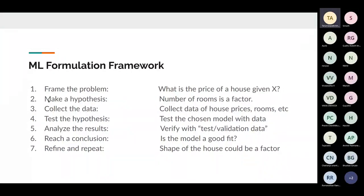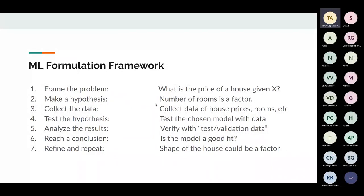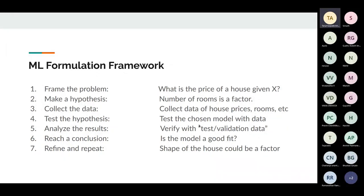Make a hypothesis. You always say 'this can be a factor.' I hypothesized that rooms is a factor. Sometimes you make a wrong hypothesis — that's fine, you come back to it with refine and repeat. You always make a general hypothesis based on common sense. Then you go and collect data — in this case, number of rooms, house prices, and more.